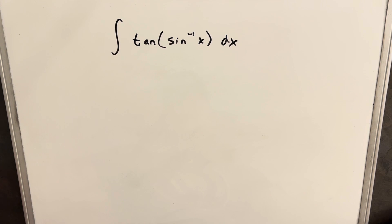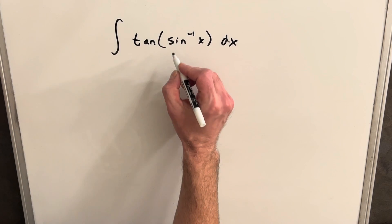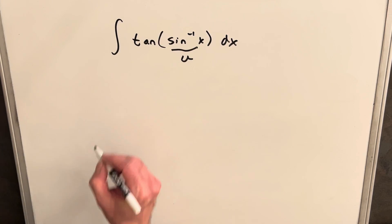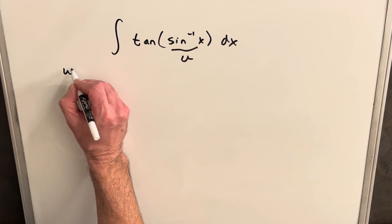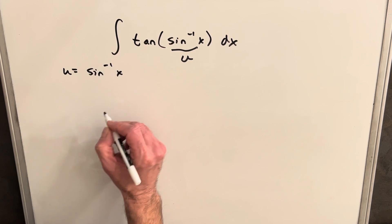I always find this interesting when we have the inverse inside the function or the function inside the inverse. Let's see what happens if we make this our u in a u-substitution, so we're going to call u equal to sin^(-1)(x).